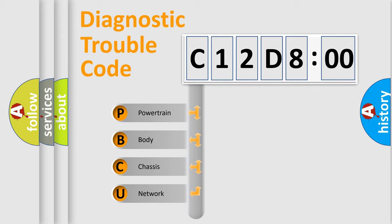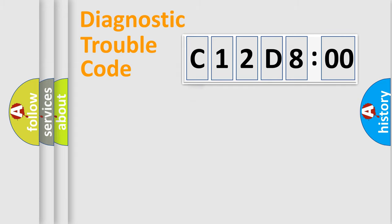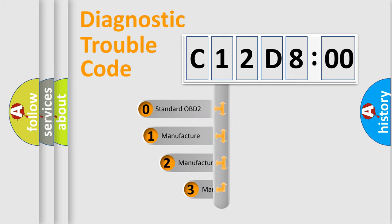We divide the electric system of automobiles into four basic units: Powertrain, Body, Chassis, Network. This distribution is defined in the first character code.